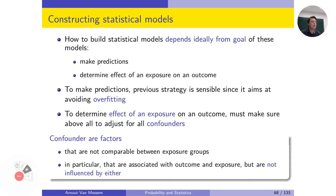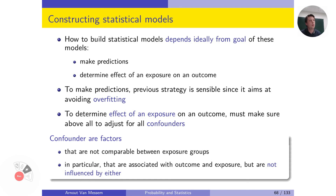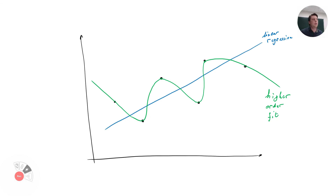One final remark: how to construct a model depends on the goal of your analysis. Do you want to make predictions — inputting new data to get an output for tree length — or do you want to find the effect of an exposure on an outcome, such as how residual ash contributes to tree length? These are two different goals and require different approaches to model construction. If we want to make predictions, the forward strategy we used is appropriate, and in that case we want to avoid overfitting by including only the truly significant terms.